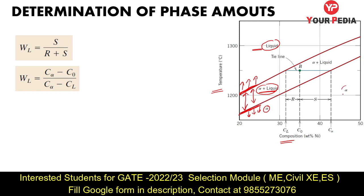In the liquid region only liquid is present, and in the solid region only solid is present. But if a point is given in the two-phase region — for example, point B — then how much solid and how much liquid is present out of 100 percent? This is the key question. To calculate the weight percent of each phase, we use the inverse lever rule.